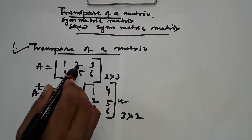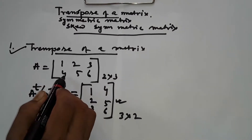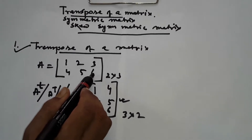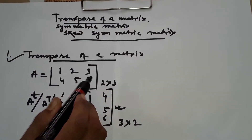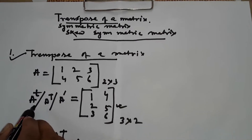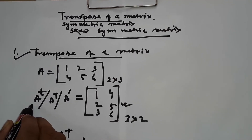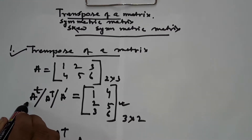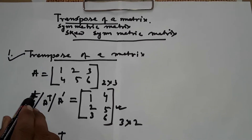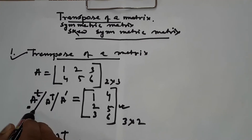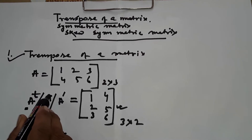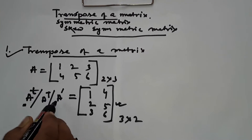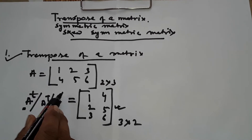The matrix A is: 1, 2, 3, 4, 5, 6. The transpose of a matrix can be written as A to the power T, or A prime (A dash).